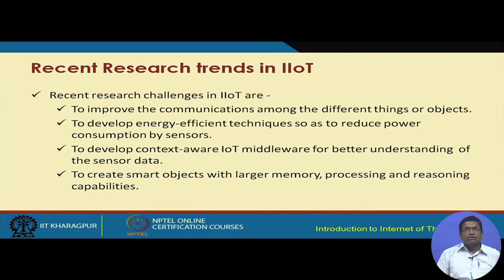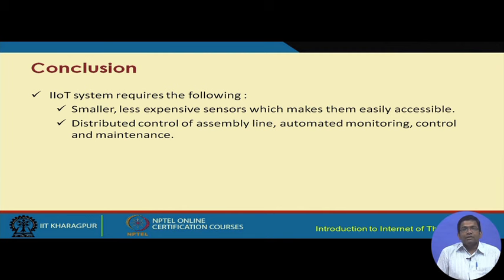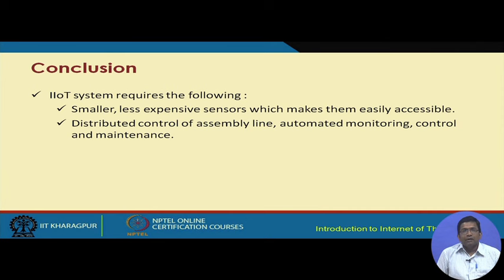In terms of recent research trends: first is to improve communication among different things or objects; second is to develop energy-efficient techniques to reduce power consumption by sensors; third is to develop context-aware IoT middleware for better understanding of sensor data; and fourth is to create smart objects with larger memory, processing, and reasoning capabilities. IIoT systems have a requirement for very small-sized, less expensive sensors which are easily accessible.